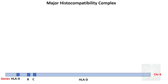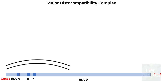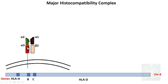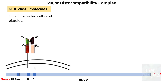Let us now look at the structure of MHC class 1 molecule. Consider this is a cell membrane. The MHC complex contains a heavy chain with three domains: alpha 1, alpha 2, and alpha 3. This alpha heavy chain spans across the cell membrane. There is also a very small light chain called beta 2, which is non-covalently associated with the alpha chain and does not span across the cell membrane.